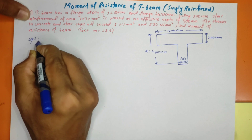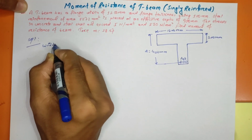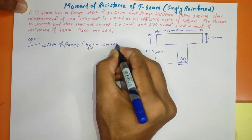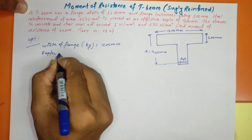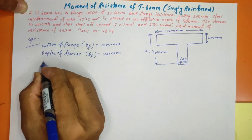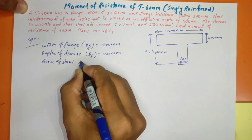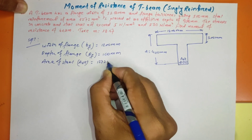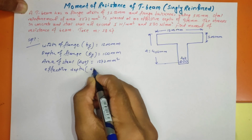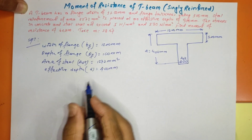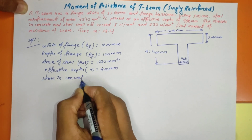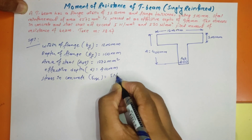Given data: flange width bf = 1200mm, depth of flange Df = 100mm, area of steel Ast = 272mm², effective depth d = 400mm, stress in concrete σcbc = 5 N/mm².